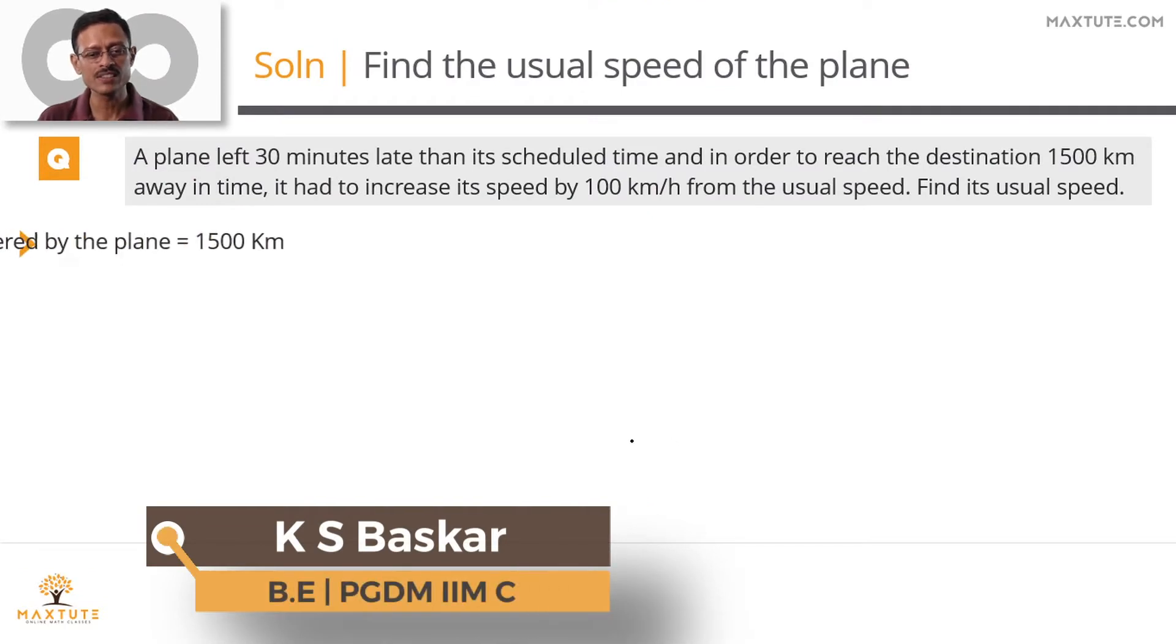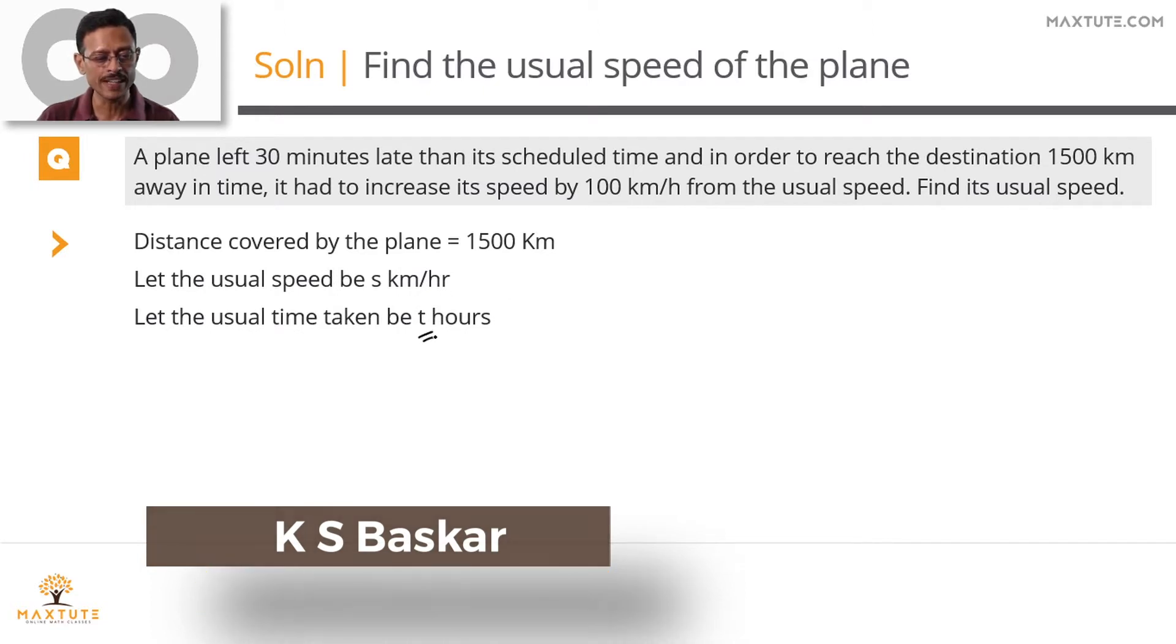Let's assign certain variables. The distance covered is equal to 1500 kilometers. Let the usual speed be s kilometers per hour and let the usual time taken be t hours.